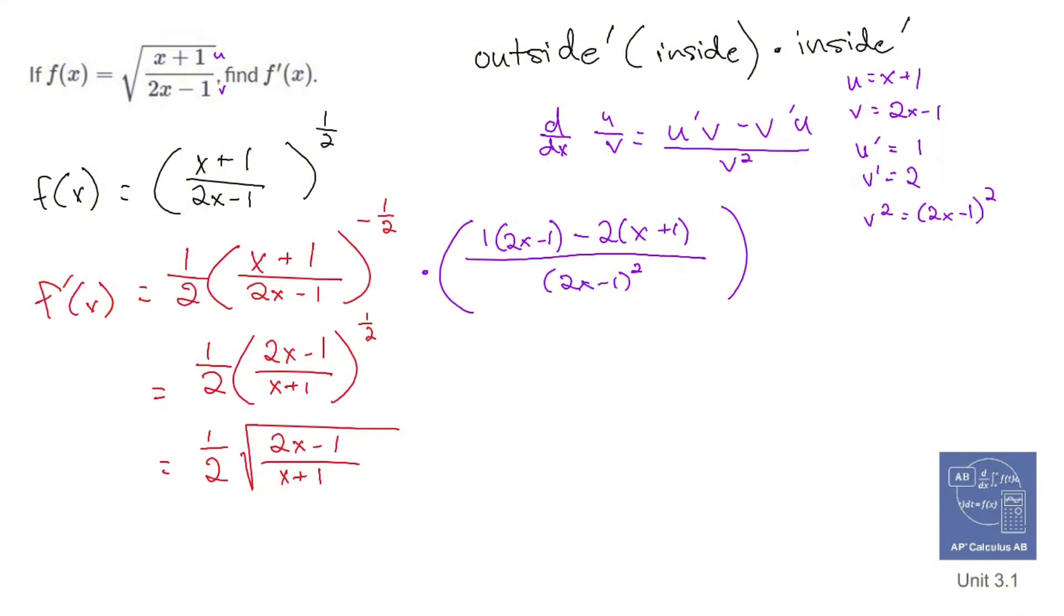What can I do with the purple? Well, I can distribute the one which changes nothing. So 2x minus 1, I can distribute the negative 2, so minus 2x minus 2, so that cancels out nicely, all over 2x minus 1 squared. And so that will leave me with negative 3 over 2x minus 1 squared.